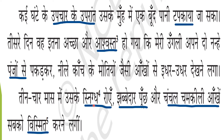Within three to four months, its sticky hair, fluffy tail, and restless shiny eyes started surprising everybody — because everyone had said it would not survive. It was just the authoress's efforts that had given it life. Snigdh roein means sticky hair; jabbedar poonch means fluffy tail; chanchal chamkili aankhe means restless shiny eyes; vismut karni lagi means started surprising.